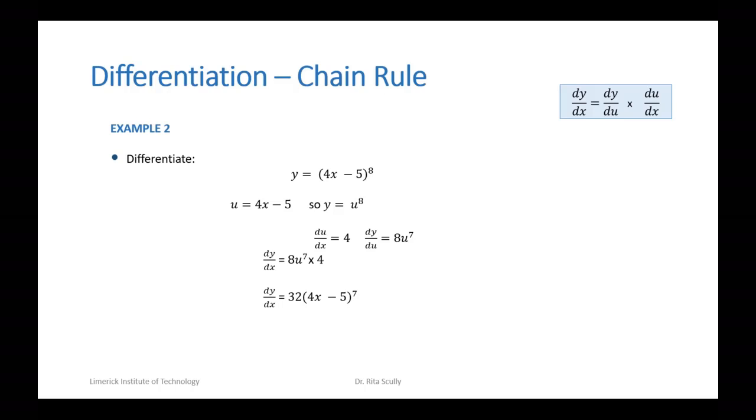Here we're multiplying this out, and again removing the u and putting in what it was standing for, which is 4x minus 5. So 32 by (4x minus 5) to the power of 7. Thank you.